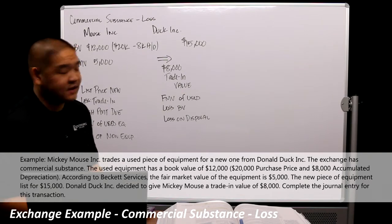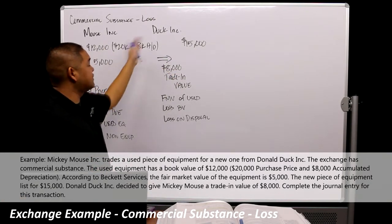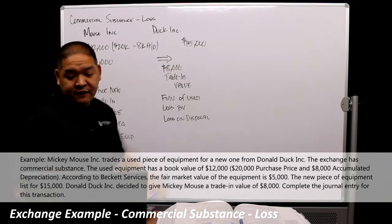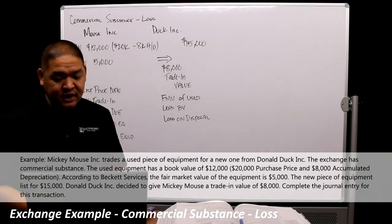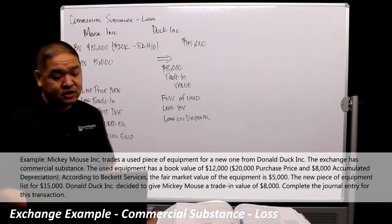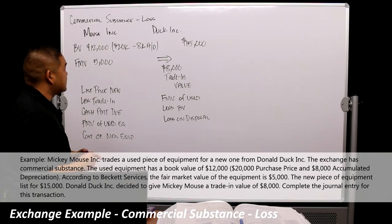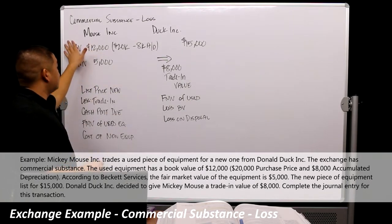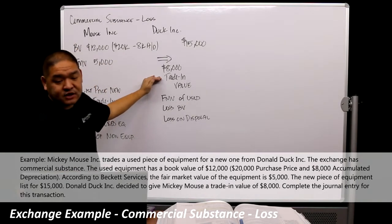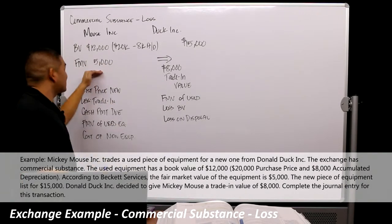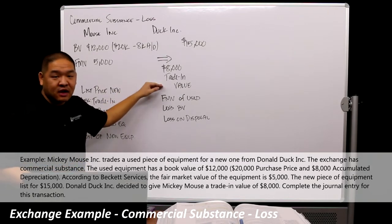The new piece of equipment lists for $15,000. So I don't know if it's because the prices went down or they're downgrading or whatnot, but $15,000 is the list price for the piece of equipment Donald Duck has decided to give Mickey Mouse in this trade. And then Donald Duck Inc. has given Mickey Mouse Inc. an $8,000 trade-in value. So yes, it's worth $5,000, but we'll let you trade it in and get $8,000 in trade-in value.